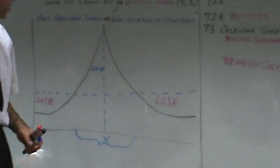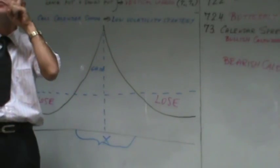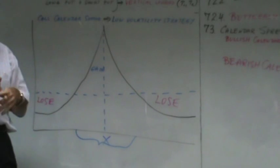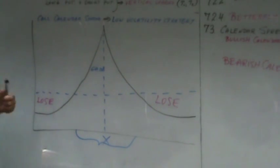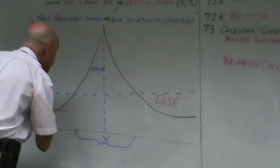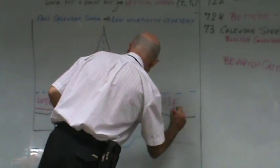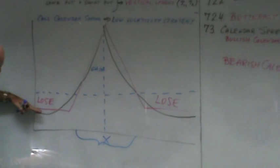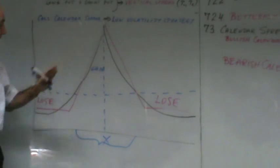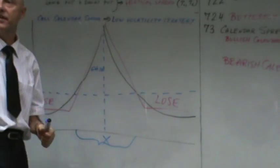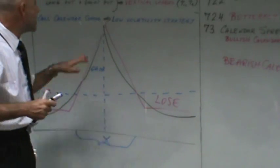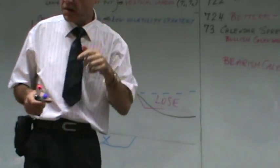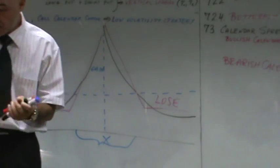The other spread we did — the butterfly — was also a low volatility strategy. The difference is that time value decays in a smooth manner for the calendar spread, giving it a smooth curve shape. The butterfly has a more angular shape — straight lines on the sides going up to a peak. Both are low volatility strategies, but the calendar spread has a smoother profile and is very similar to the butterfly spread.